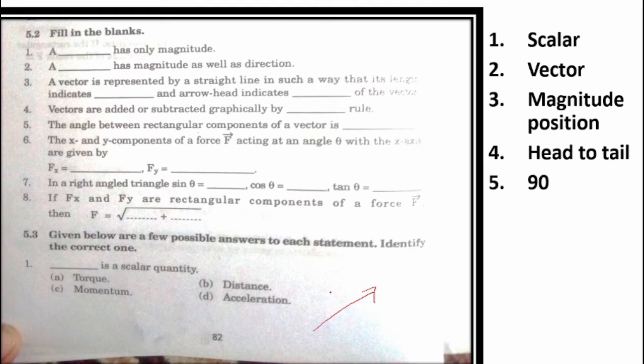X and Y components of a force F acting. We have X and Y components. Fx is equal to F cos theta. X axis is equal to cos theta. Y axis is equal to sin theta. So Fx is equal to F cos theta. Fy is equal to F sin theta.